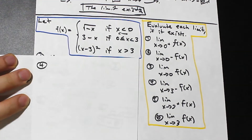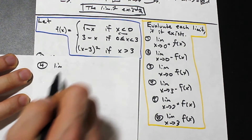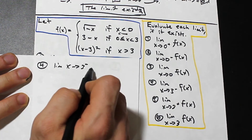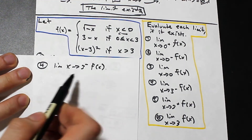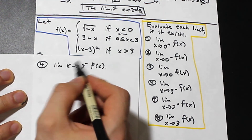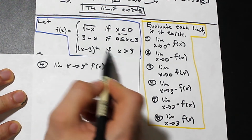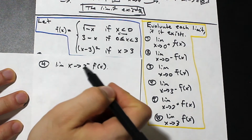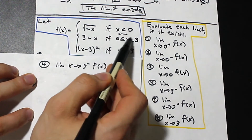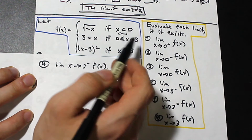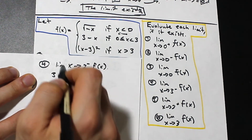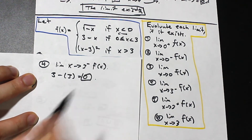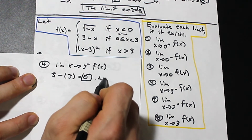Question 4: the limit as x approaches 3 from the left. Since x minus 3 squared applies when x is greater than 3, that would be approaching from the right. For the left of 3, we use the middle function, 3 minus x. Plugging in 3 gives 3 minus 3, which equals 0. The limit exists.